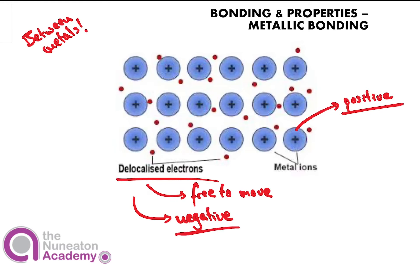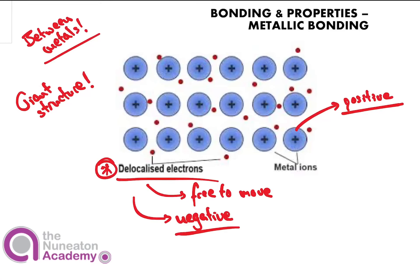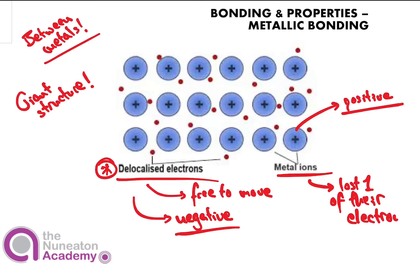That combination of positive and negative means the metal ions can bond with each other, and what we then have is a metallic structure, which is a giant structure. It's bearing in mind that it is between metals — you have delocalised electrons that are free to move. Because they move out of the metal atoms, the metal atoms become ions having lost electrons, which means you have negative charge and positive charge, which are opposite and therefore attract.